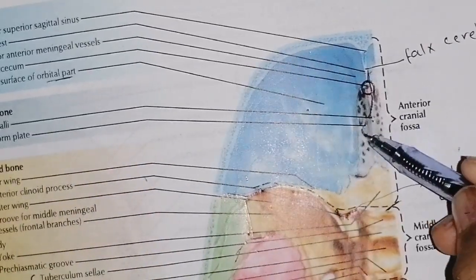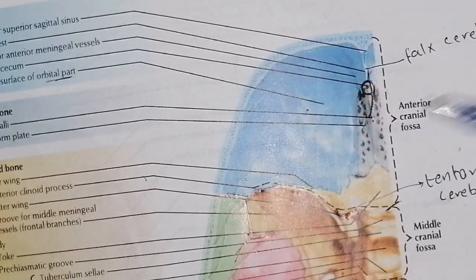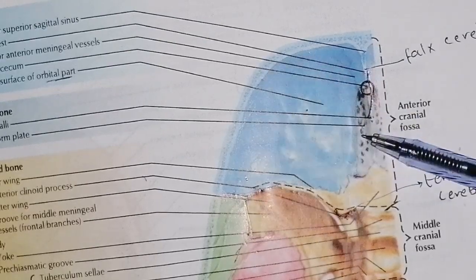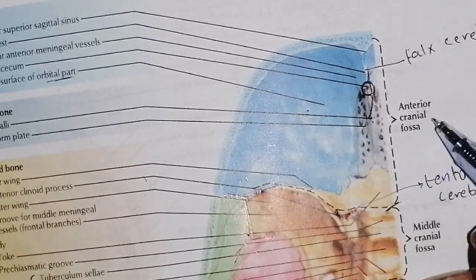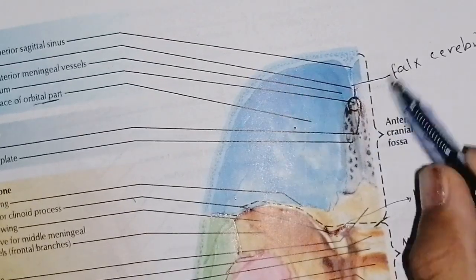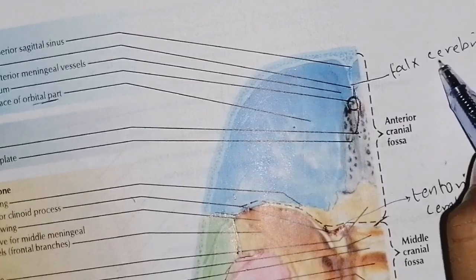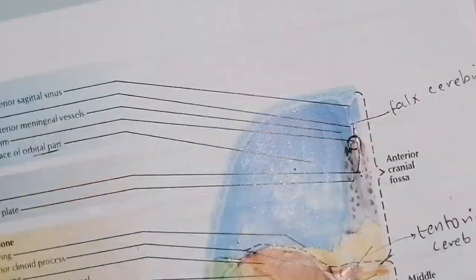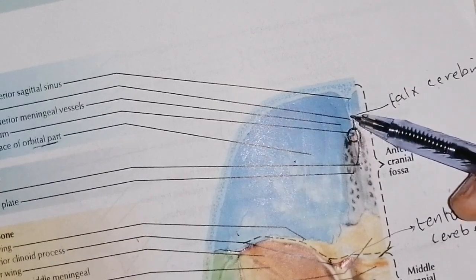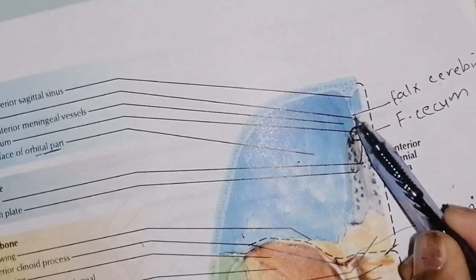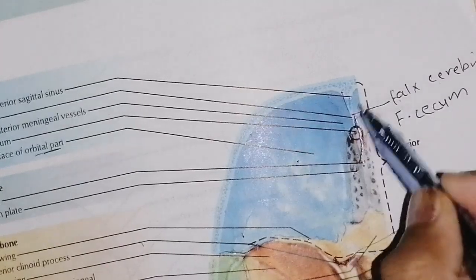The cribriform plate has small holes. On the cribriform plate there is a projection — we call this the crista galli, spelled G-A-L-L-I. Attached to the crista galli is the falx cerebri. The frontal bone has a crest, and near the crista galli there is a small aperture called the foramen cecum. This is an opening from which the small veins of the nasal mucosa pass and go to the superior sagittal sinus.